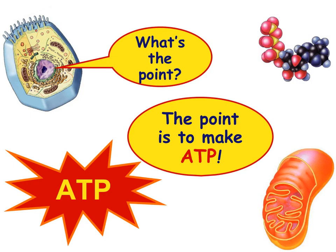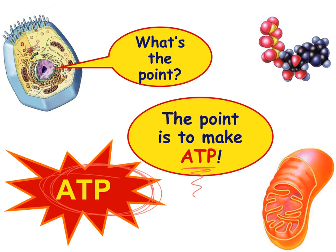What's the point? ATP is always the point — the production of the energy currency molecule — because this molecule holds a ton of potential energy to do the work of cells. That's it. Go back, review, rewind, pause. Good luck.